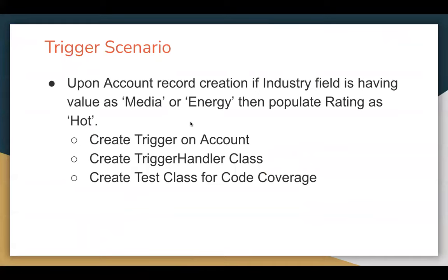Let's understand the first requirement. A trigger scenario is written which is upon account record creation: if the industry field is having value as media or energy, then we need to populate rating as hot. Industry and rating are both standard fields available on account. Whenever we create a new account record and industry is media or energy, we need to populate the rating field value as hot.